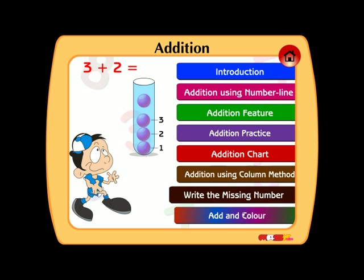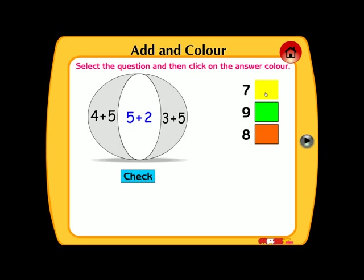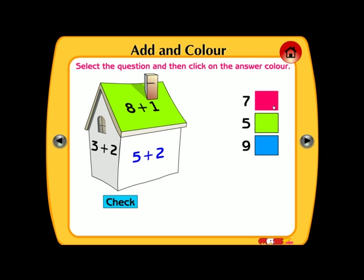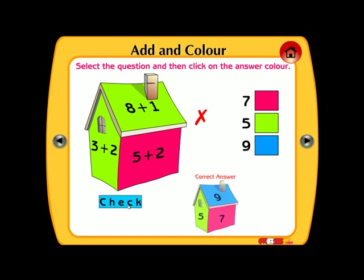Add. Select the question and then click on the answer color. Right. Wrong.